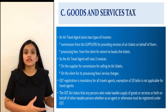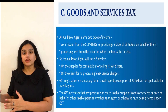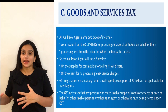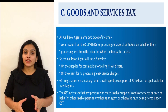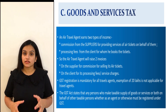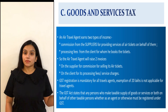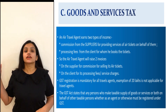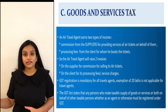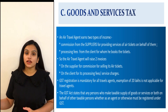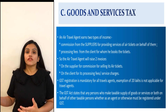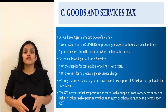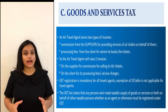C — GST. An air travel agent earns two types of income: commission from the supplier for selling services on their behalf, and processing fee from the client for serving them. Therefore, the air travel agent will raise two invoices: one on the supplier for the commission for selling their ticket, and one on the client for the processing fee or service charge for providing them the service.